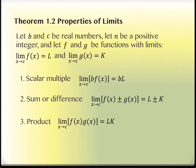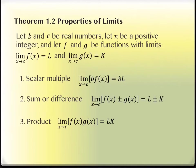If you have a sum or a difference, then the limit is the value of the individual sums and differences added or subtracted together. On the product property, the limit of the products is the same as the product of the limits. So we can take f times g and then take the limit, or we can take the limit of f — that's L — times the limit of the g function, which was K.